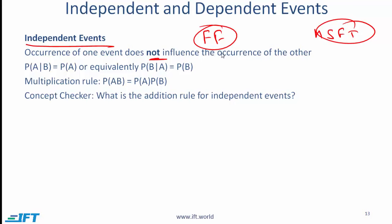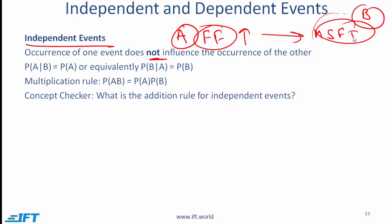Asian markets open first. Let's say that on a given day this stock has gone up. Knowing that the stock has gone up tells you nothing about what is going to happen to the Microsoft stock. If that is indeed the case, then we say that these two events — event A of 4G Fertilizer going up — is completely independent from event B, which is Microsoft stock going up.